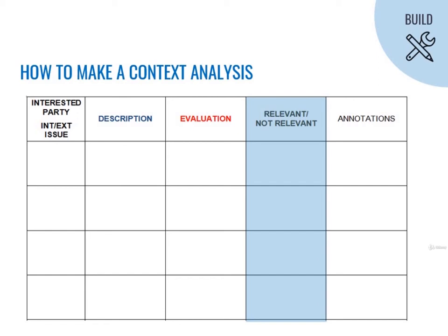To be more specific, in the case of interested parties, you should also write an evaluation of their needs and expectations regarding OHS. In the case of internal and external issues, just write a review of how they could influence the way your company deals with OHS. Fourth column: here we should write our verdict — do we consider it relevant for OHS or not? This question is quite important since, if we state it is relevant, the game goes on and we will keep evaluating it in our risk analysis. Finally, our fifth column: annotations — always leave an extra column for any extra notes needed.